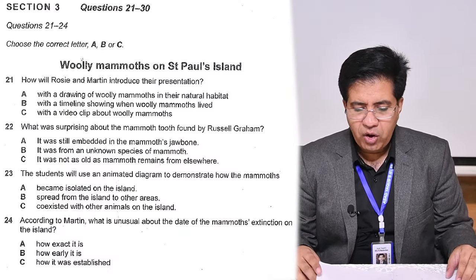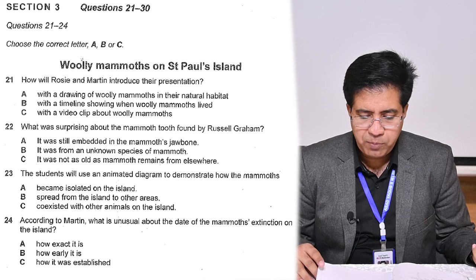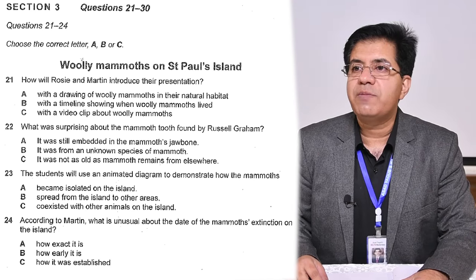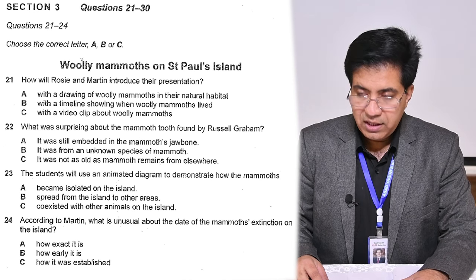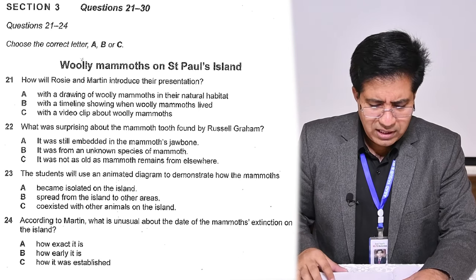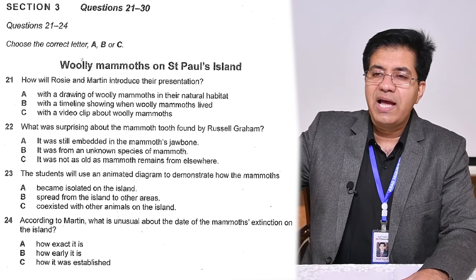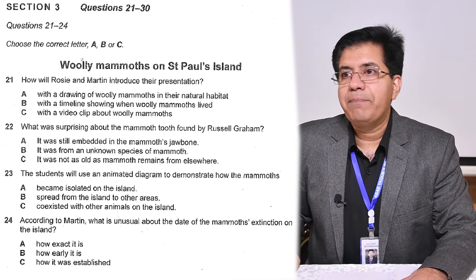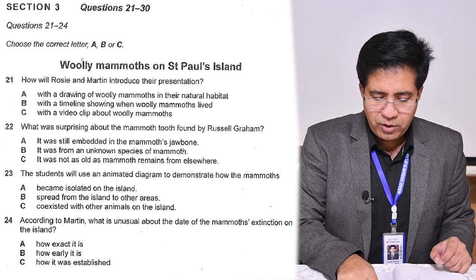The topic is woolly mammoths on St. Paul's Island — a woolly mammoth is just a kind of animal. Question 21: how will Rosie and Martin introduce their presentation? Option A is a drawing of a woolly mammoth. Option B is a timeline showing when woolly mammoths lived. Option C is a video clip.